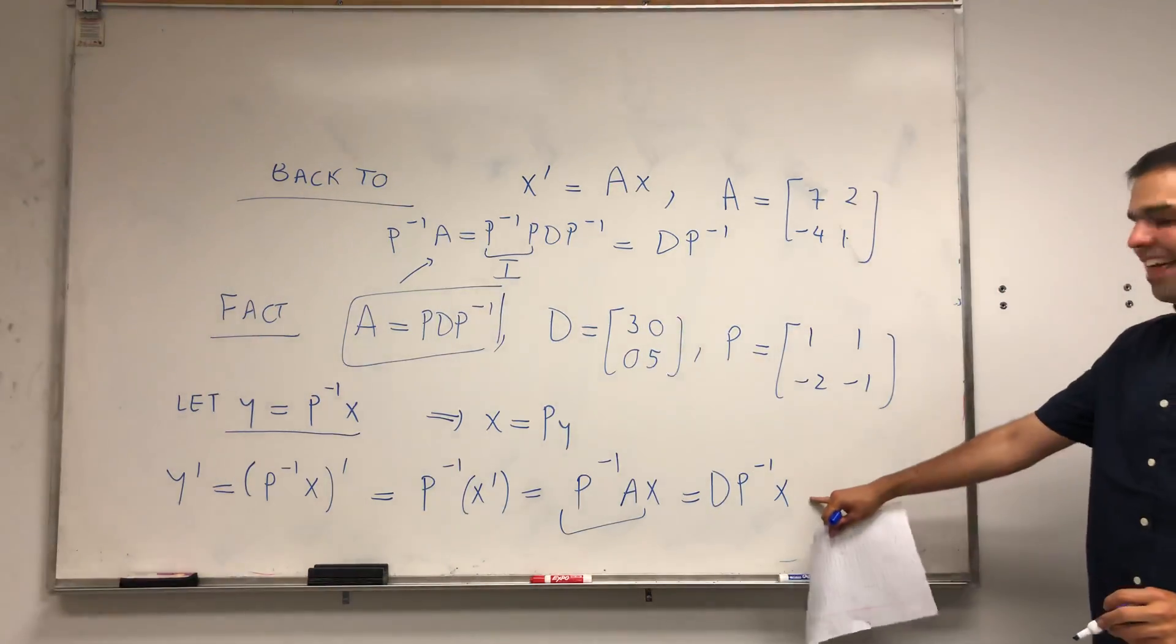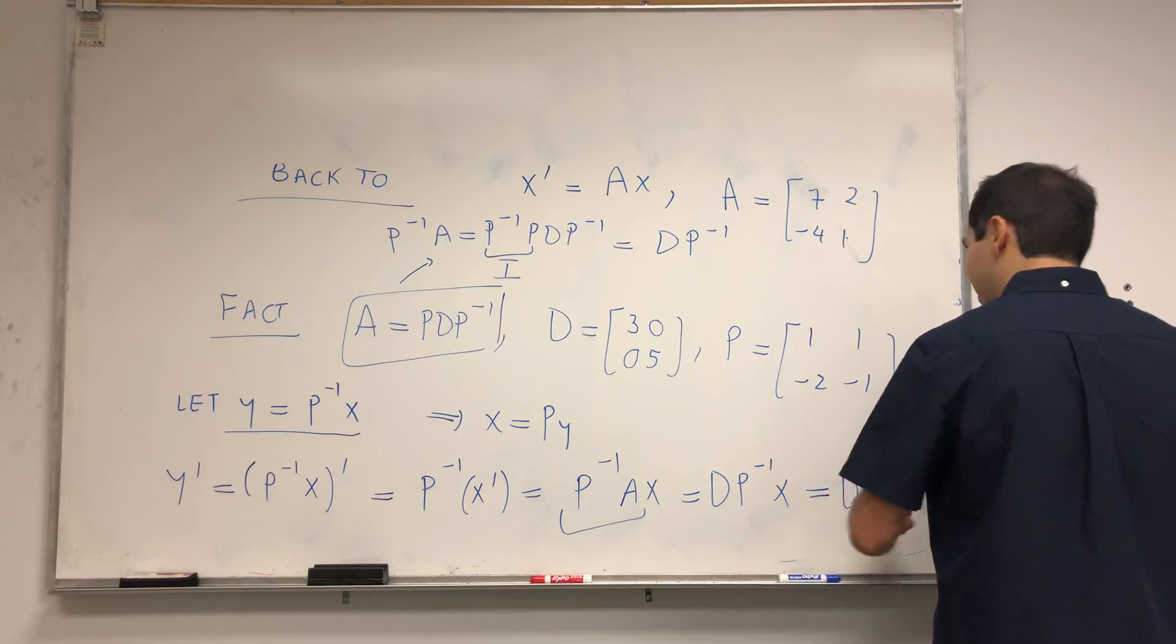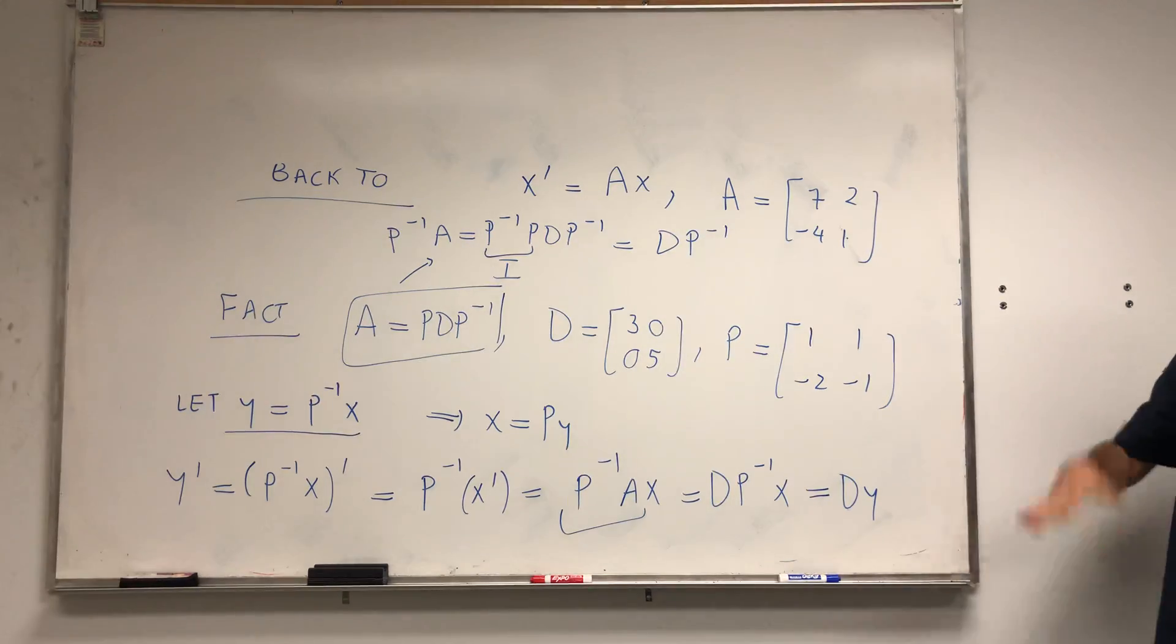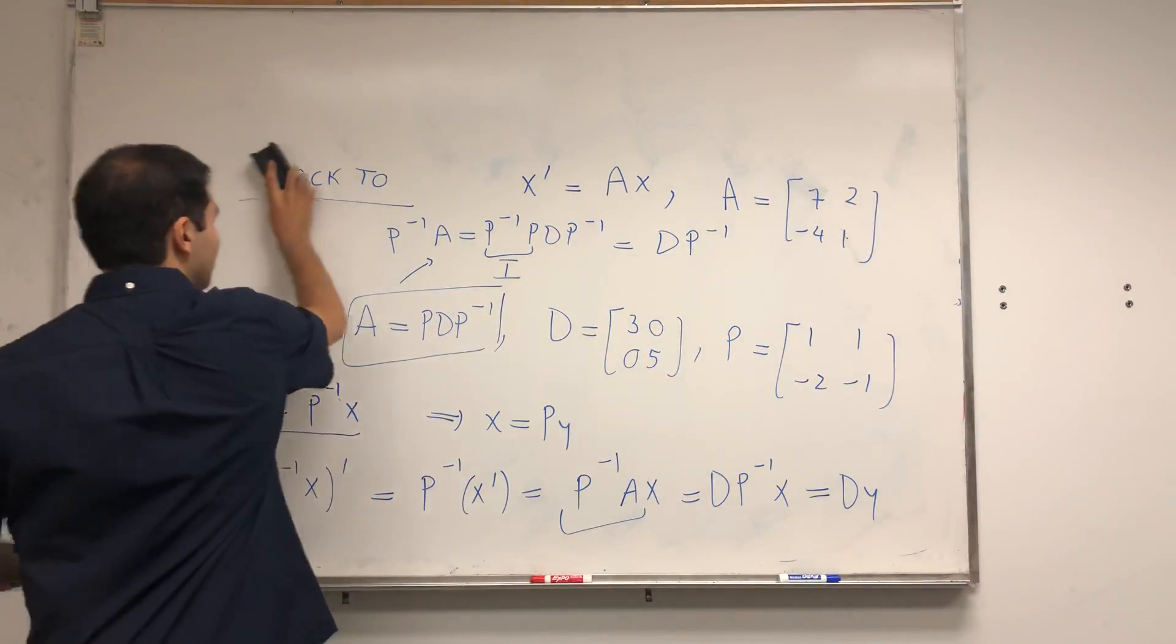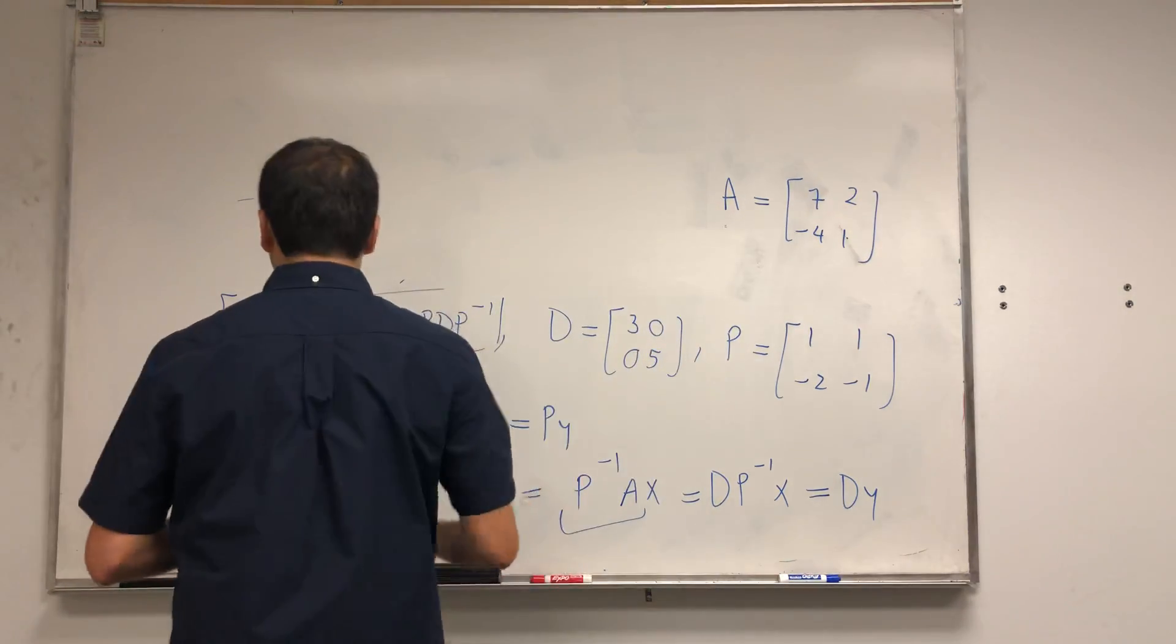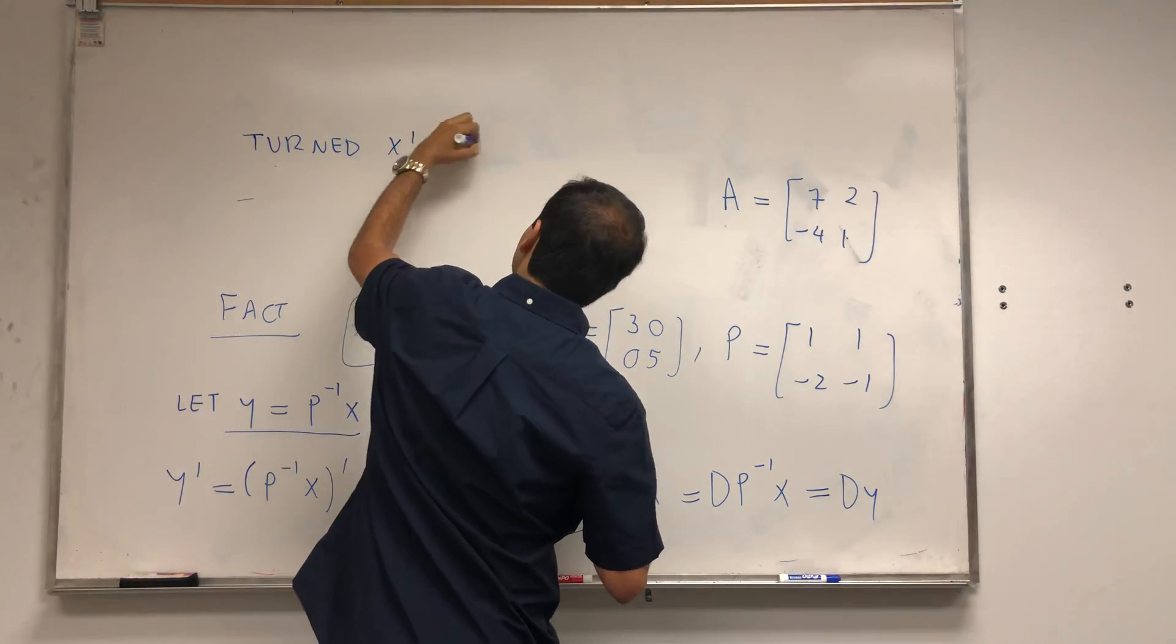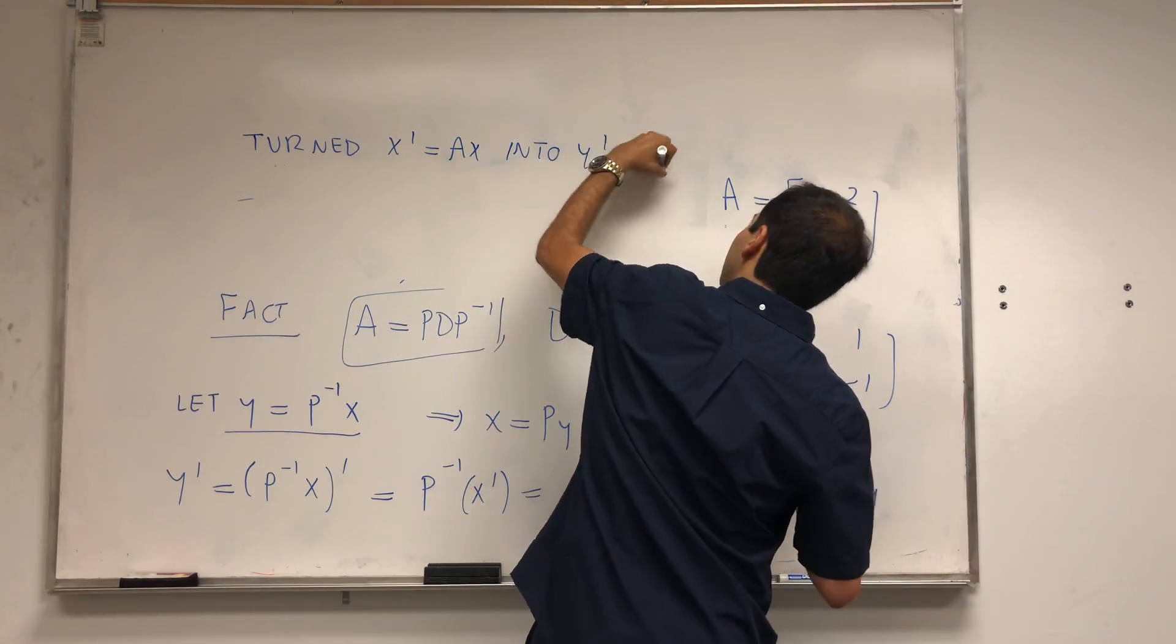This thing here becomes DP inverse of x. But what was P inverse of x? That becomes Dy. Therefore, using this weird algebra, we actually turn the system x prime equals Ax into y prime equals Dy.